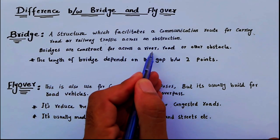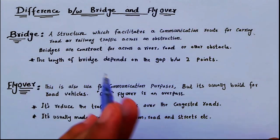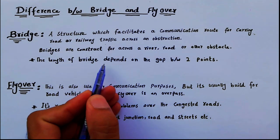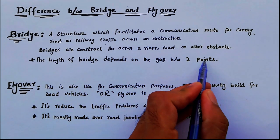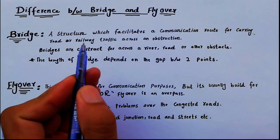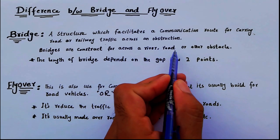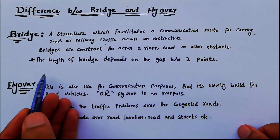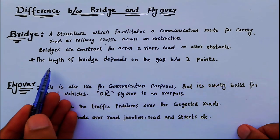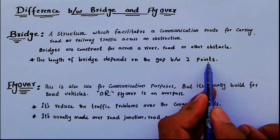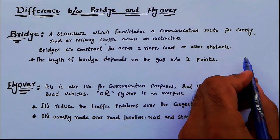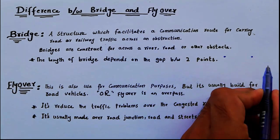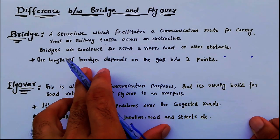Remember that bridges are constructed across a river, road, or other obstacle. Many students ask about the standard length of a bridge. Remember that the length of the bridge depends on the gap between two points. We can design or build a bridge for a river, road, or any other obstacle, and the span or length depends on the gap between those two points.